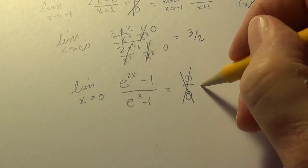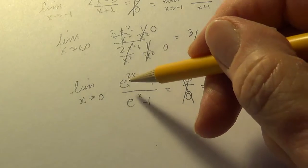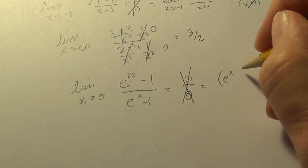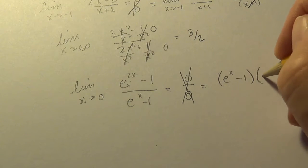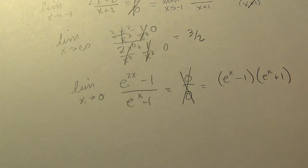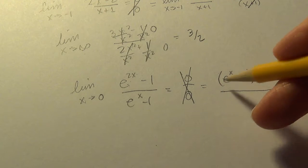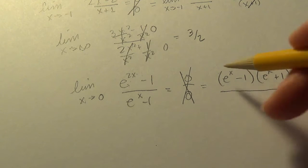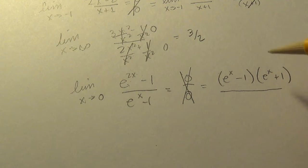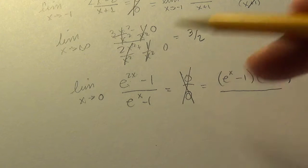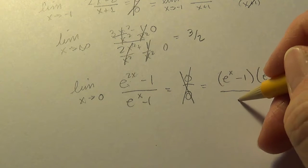All right, so e to the 2 times 0 is 1 minus 1, and e to the 0 is 1, so we get 0 over 0. So once again that didn't work, so we're hoping algebra helps. This is actually a difference of two squares, little trickier than the normal difference of two squares, but you'll check if you multiply e to the x times e to the x you get e to the 2x.